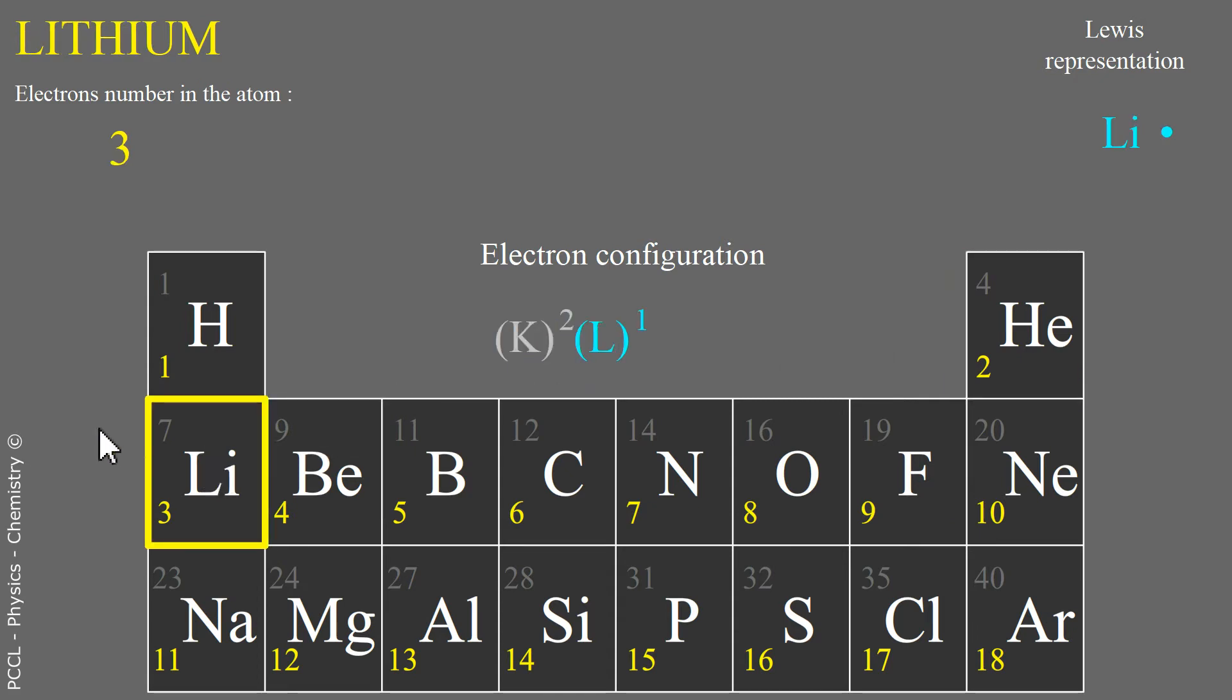Lithium. Three electrons. The two of the K shell are not represented on the Lewis diagram because they will not participate in any exchange, any binding. Here is the electron alone of the L shell. Lewis only shows the outer shell. A bachelor, as in hydrogen.